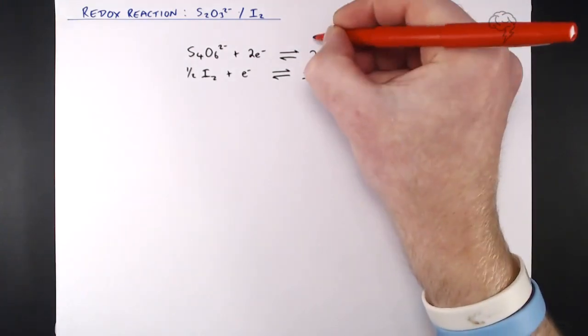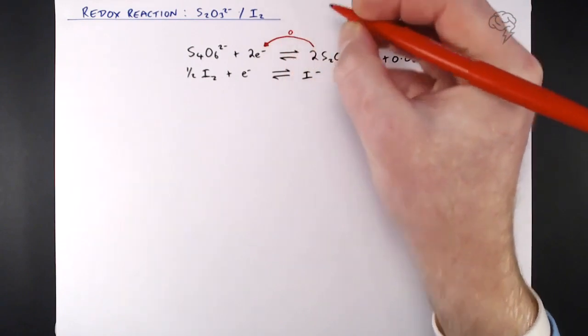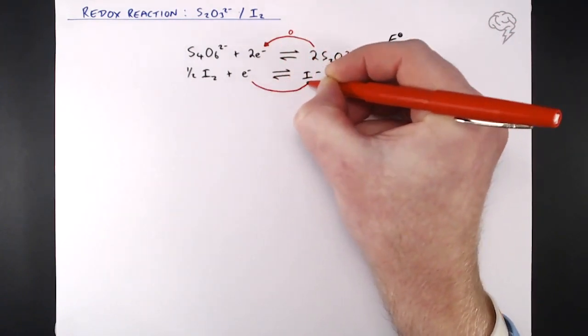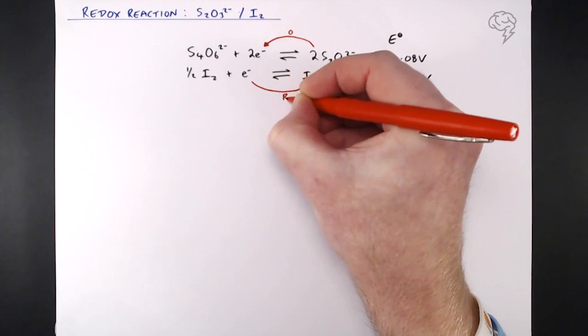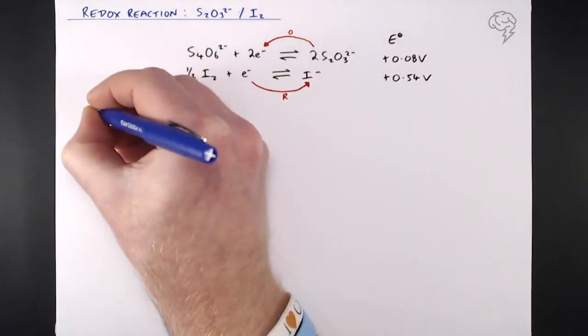Of course, you know I'm a big fan of the anti-clockwise rule now. So at the top we're going from right to left, that's oxidation, so our S2O3 2- loses two electrons to form S4O6 2-. And at the bottom we've got reduction, iodine going to iodide.